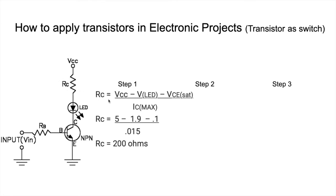RC is the collector resistance. Near RC we give a supply called VCC. The equation is: RC = (VCC − V_LED − VCE) / IC. The transistor also requires some voltage VCE in this path from C to E, and we consider VCE at saturation condition only.